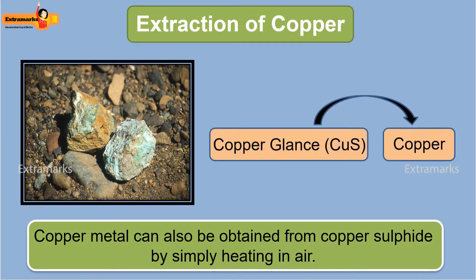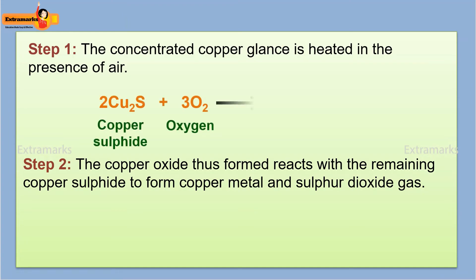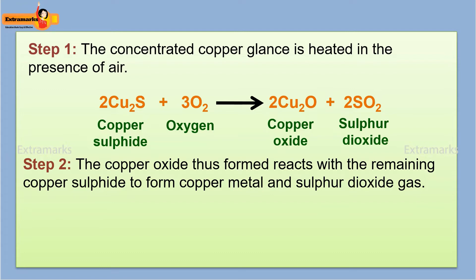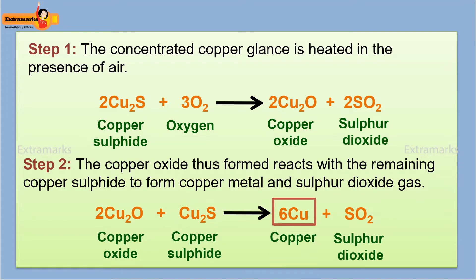Let us learn about the extraction of copper from its sulfide ore, copper glance. The process involves the following two steps. The concentrated copper glance is heated in the presence of air. The oxygen in the air reacts with the copper sulfide to form copper oxide and sulfur dioxide gas is released. When a significant amount of copper sulfide is converted into copper oxide, the supply of air for roasting is cut off. The copper oxide thus formed reacts with the remaining copper sulfide to form copper metal and sulfur dioxide gas.